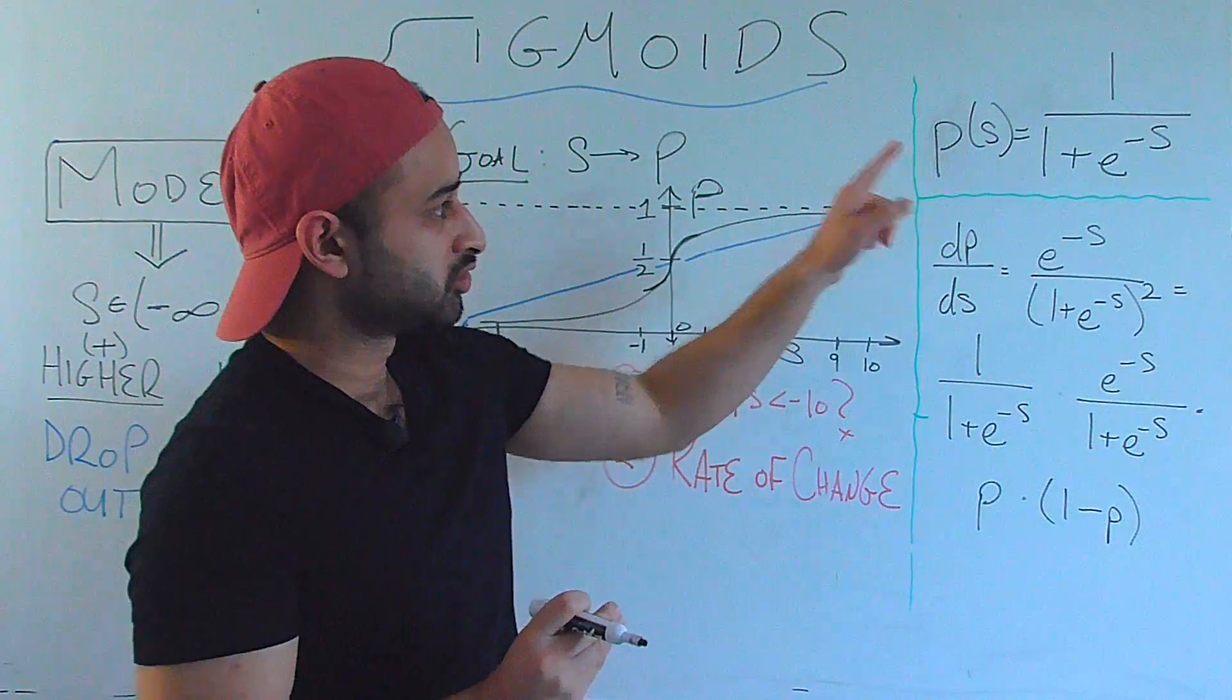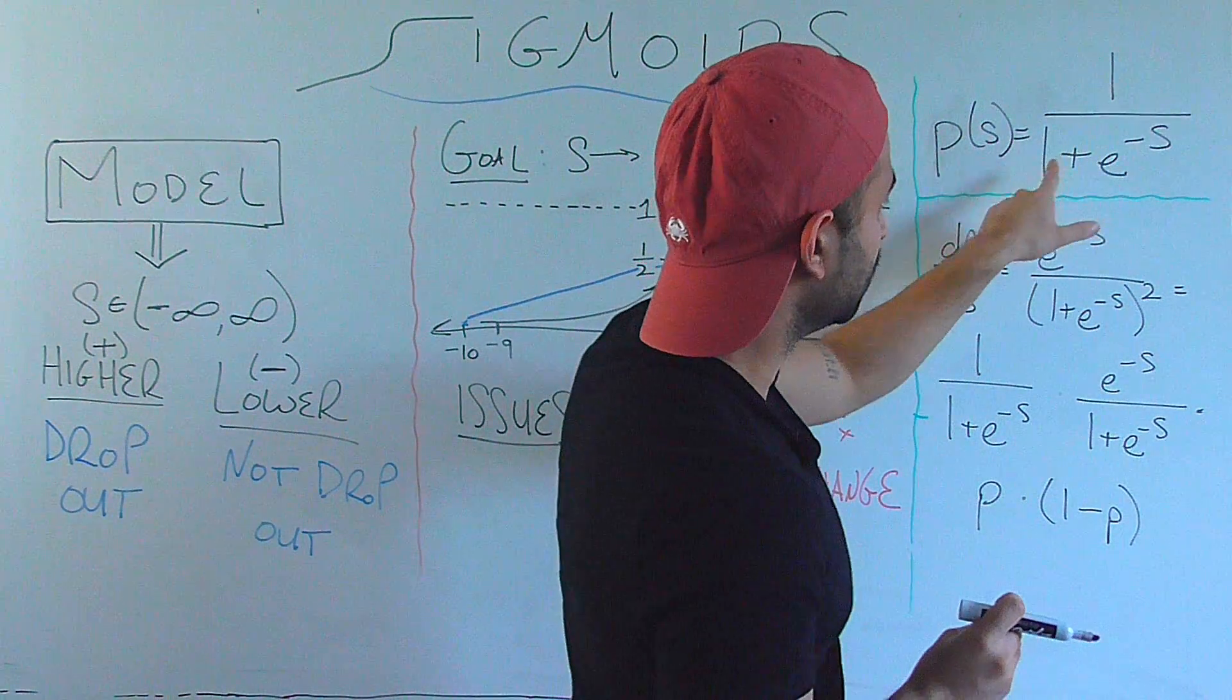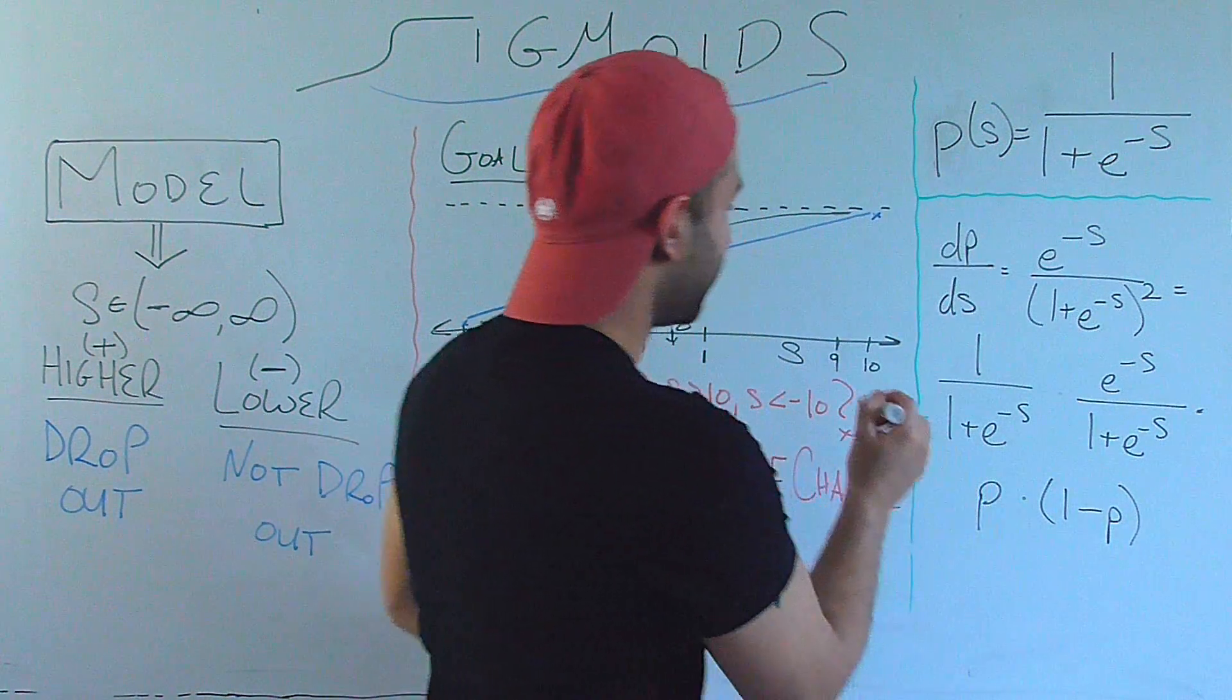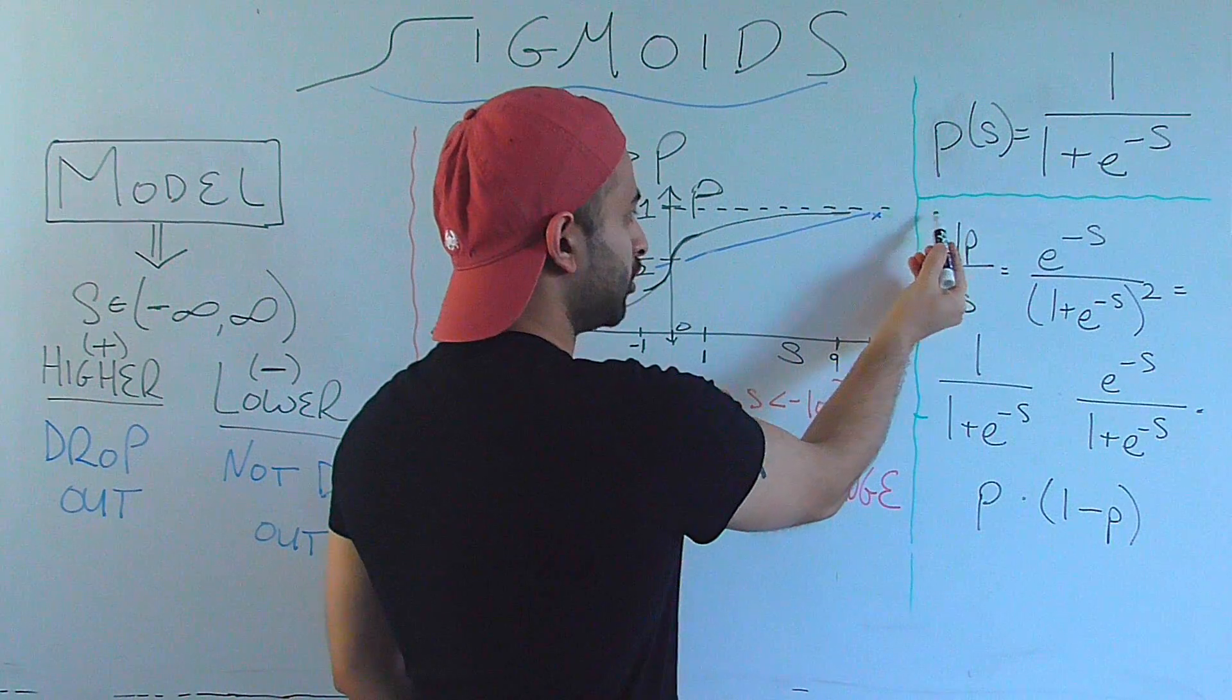Let's say s were equal to positive infinity, then the bottom of this fraction would be basically going to 1 plus 0, and that would be 1. So that matches up to the fact that if I go to positive infinity, the function, the sigmoid should be 1.